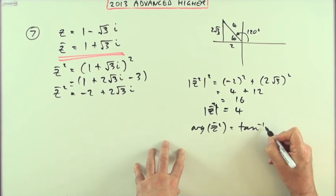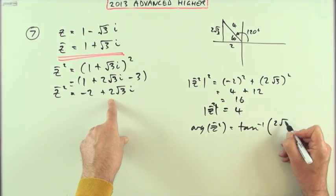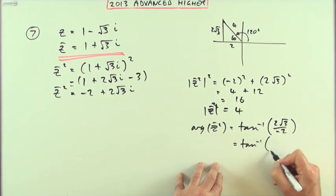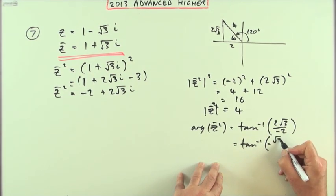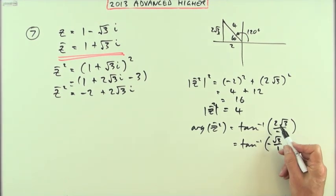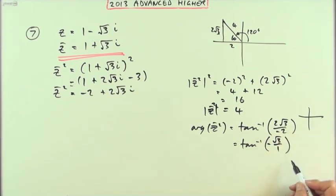And for the argument of z̄ squared, I would have inverse tan of 2√3 over -2. That's the same as inverse tan of -√3/1, but that negative is important in respect of which part it belongs to.